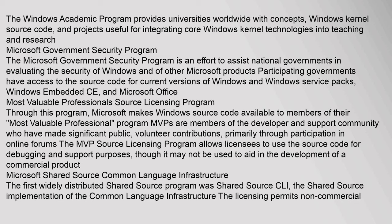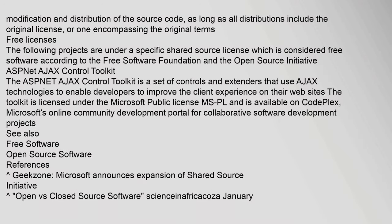Most Valuable Professionals Source Licensing Program: Through this program, Microsoft makes Windows source code available to members of their Most Valuable Professional program. MVPs are members of the developer and support community who have made significant public volunteer contributions, primarily through participation in online forums. The MVP source licensing program allows licensees to use the source code for debugging and support purposes, though it may not be used to aid in the development of a commercial product. Microsoft Shared Source Common Language Infrastructure: The first widely distributed shared source program was Shared Source CLI, the shared source implementation of the Common Language Infrastructure. The licensing permits non-commercial modification and distribution of the source code as long as all distributions include the original license or one encompassing the original terms.